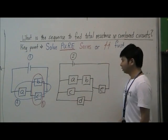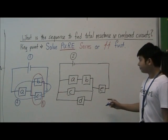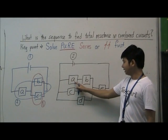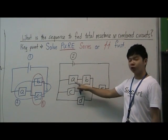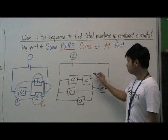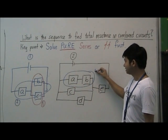Let's take a look at another circuit diagram. We see that resistors A and B here are in pure series connection. So this will be our first step - evaluate this first.